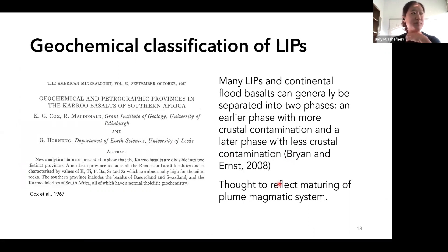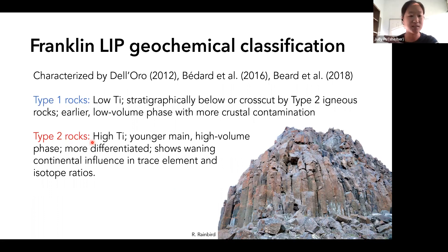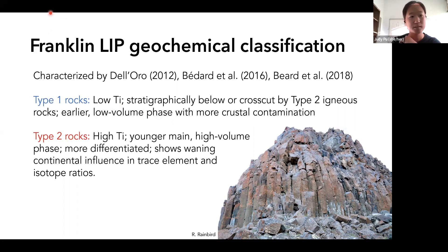The Franklin LIP has been geochemically classified. LIPs can generally be separated into two phases: an earlier phase with more crustal contamination, and a later phase with less crustal contamination. The Franklin LIP also shows these two groupings, as shown by Del Oro's thesis, Bernard et al., and Beard et al. 2018. Type 1 is the older, low-titanium phase — stratigraphically below or cross-cut by Type 2 igneous rocks — it's the earlier, low-volume phase with more crustal contamination. Type 2 is the high-titanium phase; it's younger, the main high-volume phase, usually more differentiated and showing waning continental influence in its trace element and isotope ratios.